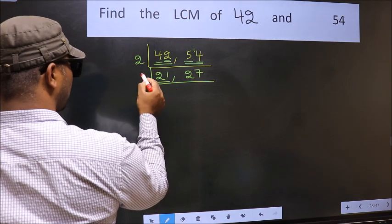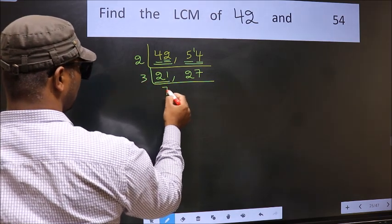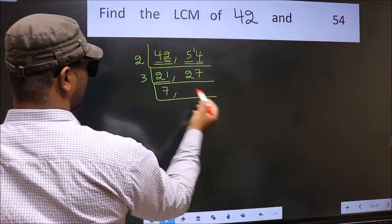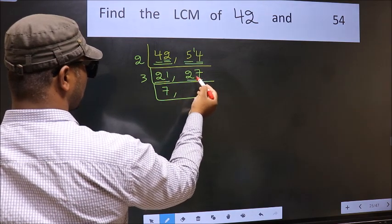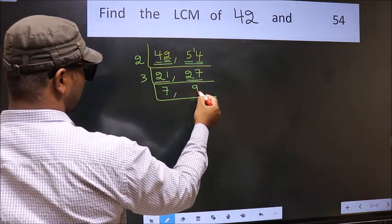Now here we have 21. 21 is 3 times 7 is 21. The other number 27, when do we get 27 in 3 table? 3 times 9 is 27.